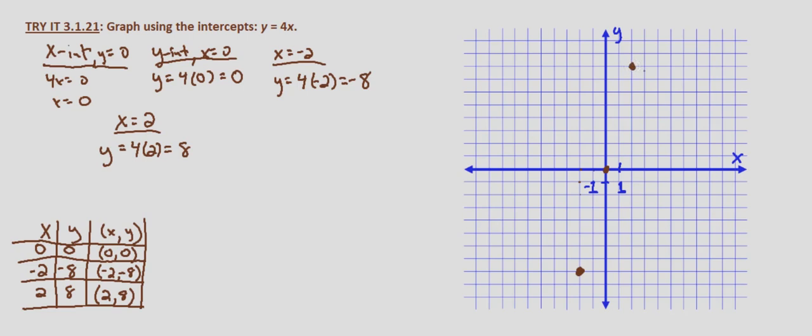All three points do line up. And then again, it's just a matter of connecting the dots. So we draw a line through the three points. And this is the graph of y equals 4x.